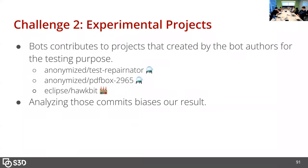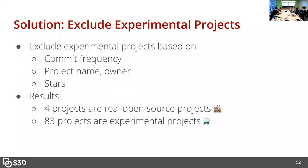The second problem was that some commits are sent to experimental projects to test the bot's functionality. For example, there are commits sent to test-repair datasets or PDF bots with specific issue numbers — those are experimental projects, not real projects. We also identified real projects like Eclipse. Our results show that four projects are real open source projects and 83 projects are experimental.